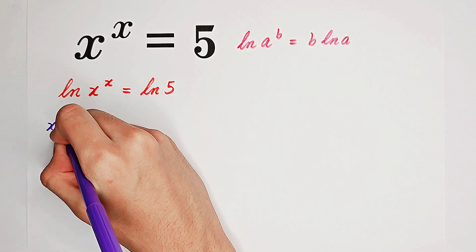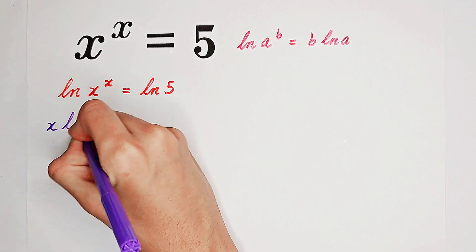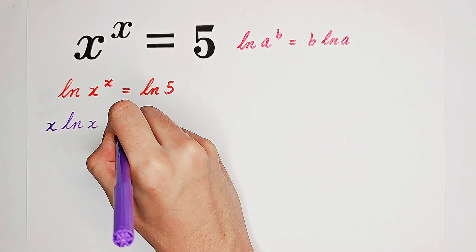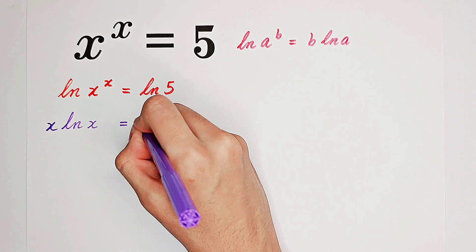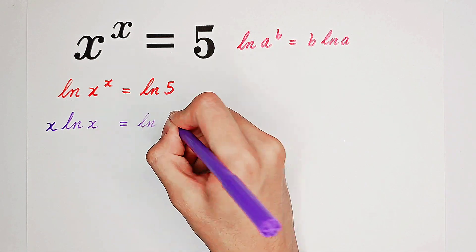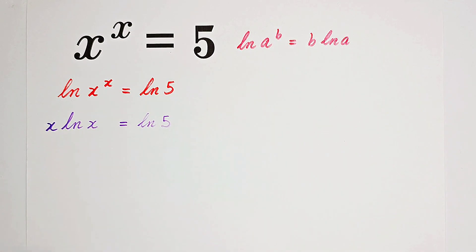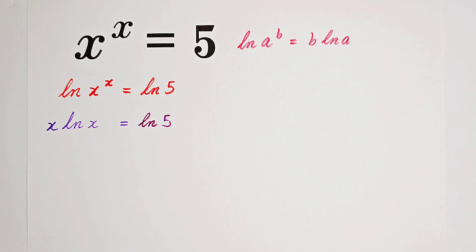So it's going to be x times the natural log of x equals the natural log of 5. Our equation has been simplified a lot.